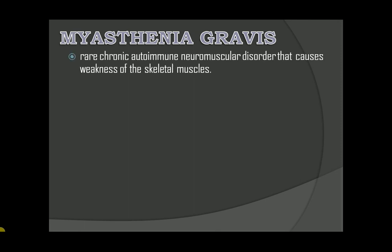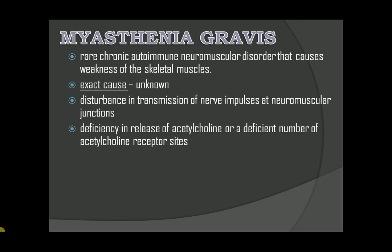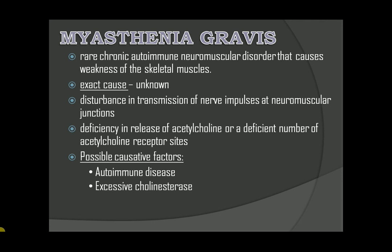Myasthenia gravis. It is a rare, chronic, autoimmune neuromuscular disorder that causes weakness of the skeletal muscles. The exact cause is still unknown. It is characterized by a disturbance in transmission of nerve impulses at neuromuscular junctions. This transmission defect results from a deficiency in release of acetylcholine or a deficient number of acetylcholine receptor sites. Possible causative factors: first, it is an autoimmune disease where the antibody destroys the acetylcholine receptor site. Second, excessive cholinesterase, which destroys the acetylcholine. These two factors result in insufficient acetylcholine in the body.